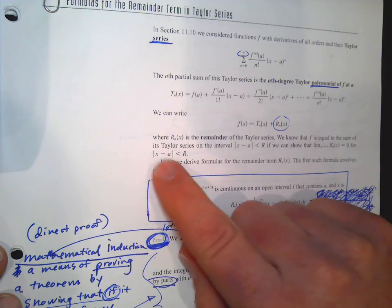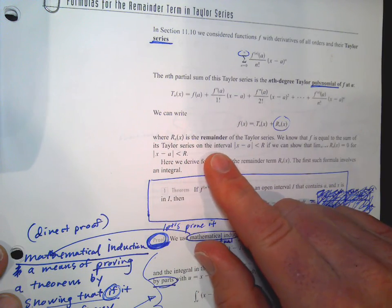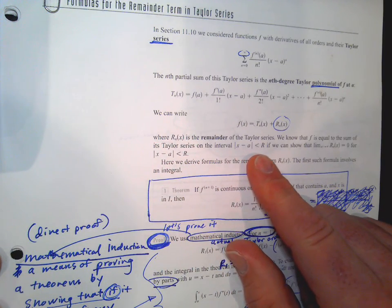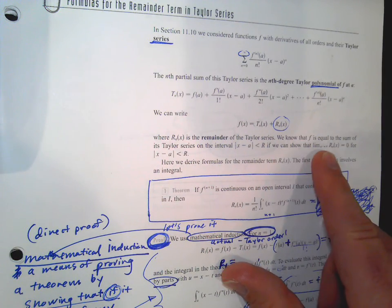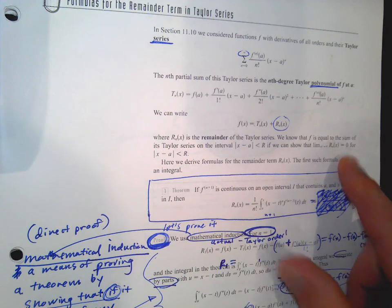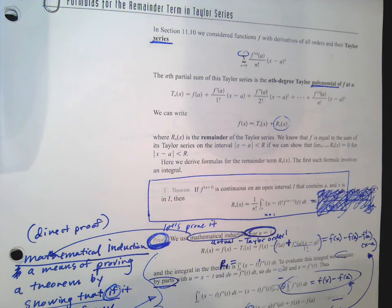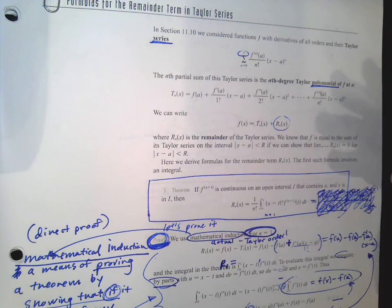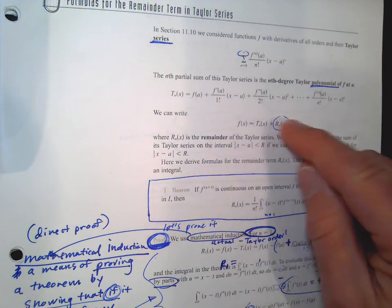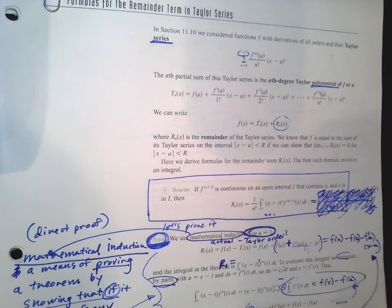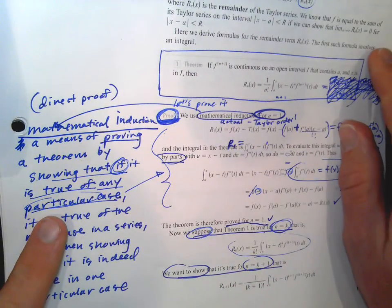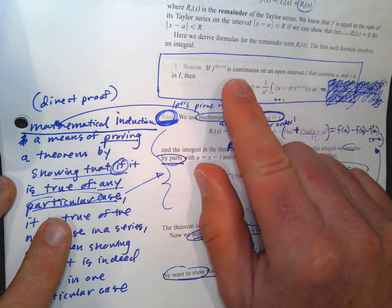We know that f equals the sum of its Taylor series on the interval where x minus a is less than r. If we can show that the limit of this goes to zero — if we take n to infinity to take the infinite terms — then the remainder, what's left between the Taylor polynomial and the actual function, should go to zero if this is true. So this is the expression for the remainder.